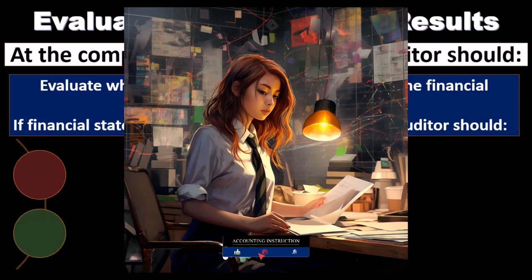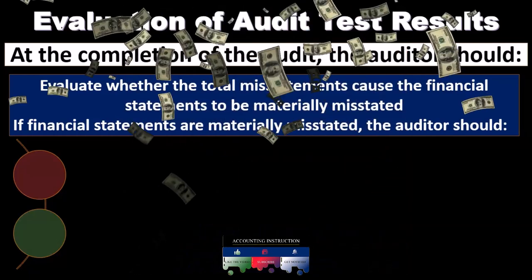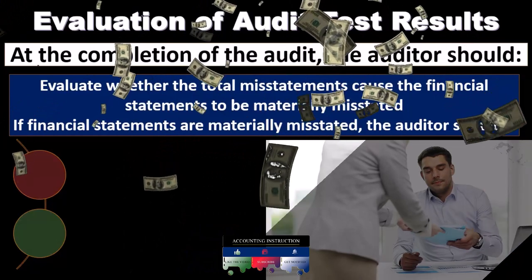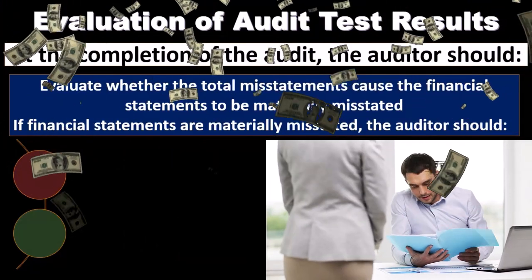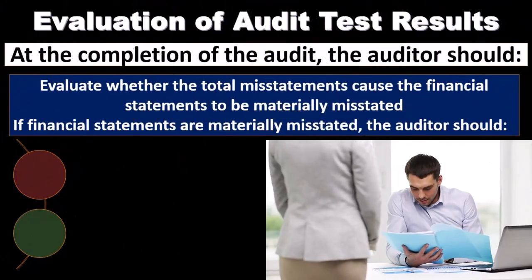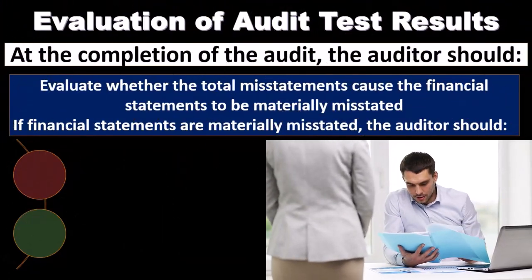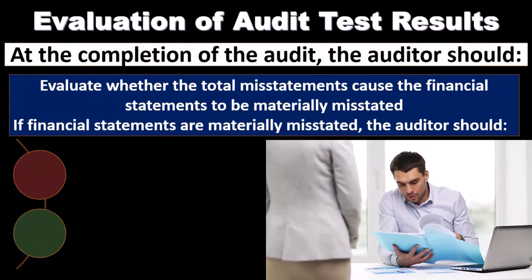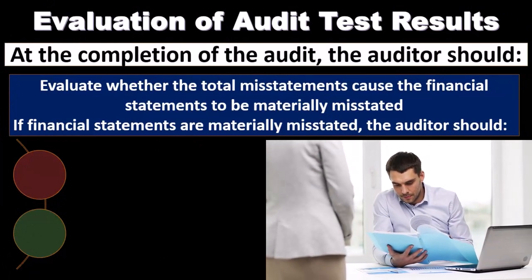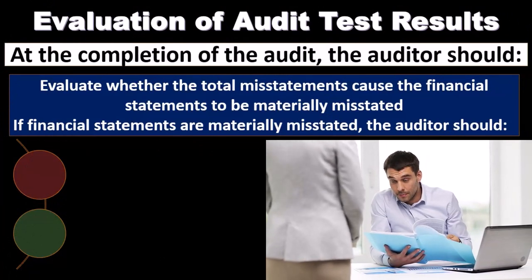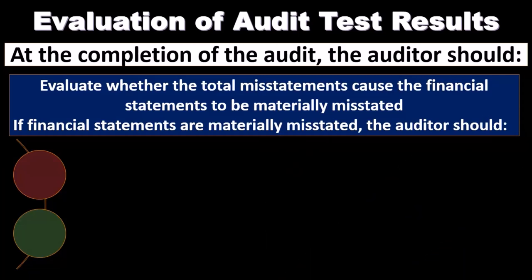As we think about what would constitute a material misstatement, we're also considering what is a tolerable level of misstatement — what level of misstatement would be tolerable at the financial statement level. As we go through the audit, we break it down into individual accounts, assertions, and transactions, considering tolerable misstatements at the assertion level as we go through that testing.